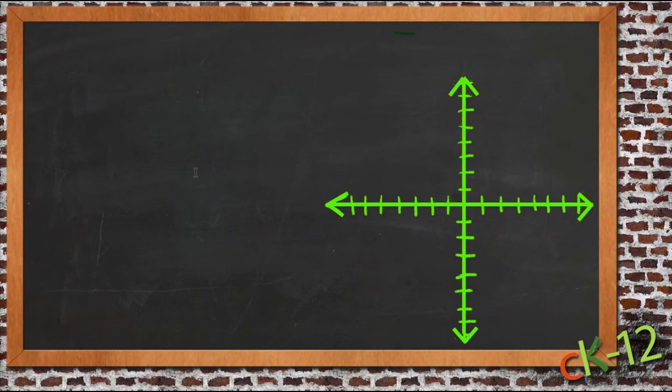All right, so this lesson talks about graphing linear inequalities in the coordinate plane. Really, that's a big fancy way of saying instead of just graphing it on a standard number line which only has an x-axis, we're going to graph the same values on a number line that goes both ways.